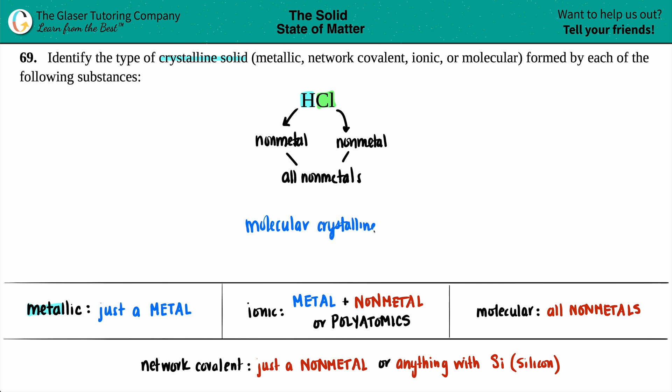Just to kind of go forward and say why it's not a network covalent is because network covalent, you have to only see just a single non-metal. So like if it was just like carbon by itself, then it would be a network covalent. Or if you see anything with silicon. But we don't have silicon here, so forget about it.